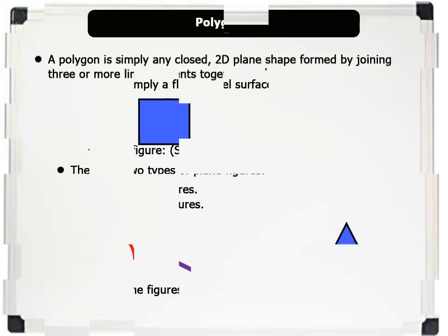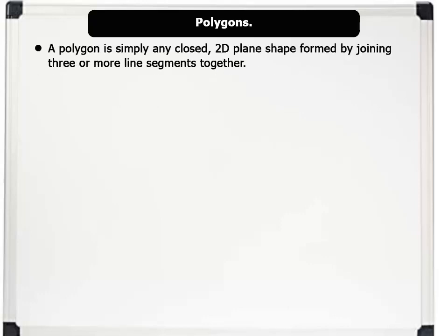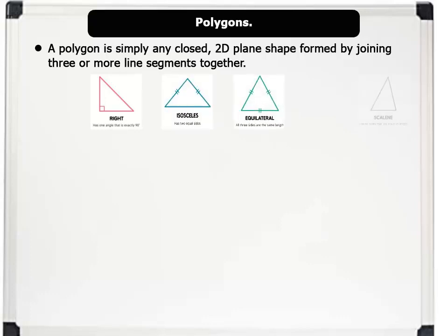A polygon is simply any closed two-dimensional plane shape formed by joining three or more line segments together. Triangles — such as right-angled, isosceles, equilateral, and scalene — are all examples of three-sided polygons.